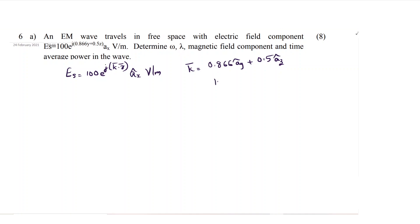You know that when k is given, the magnitude of k is similar to beta. First thing is you have to calculate the magnitude of k to get beta.